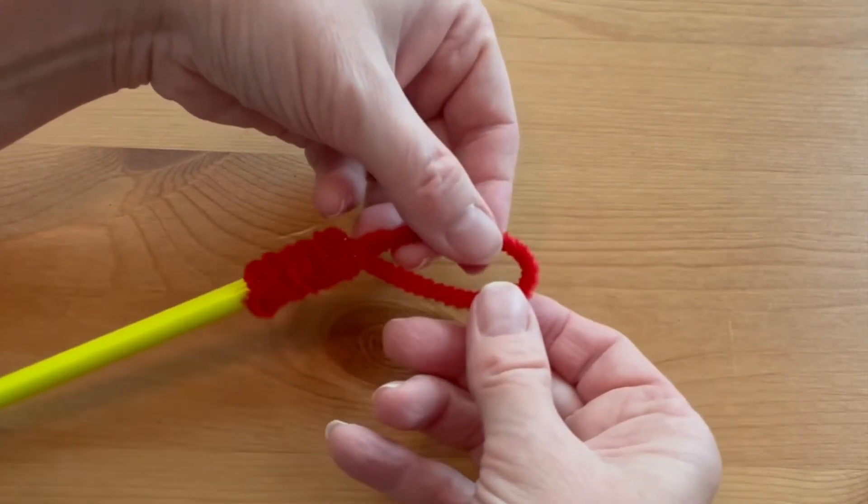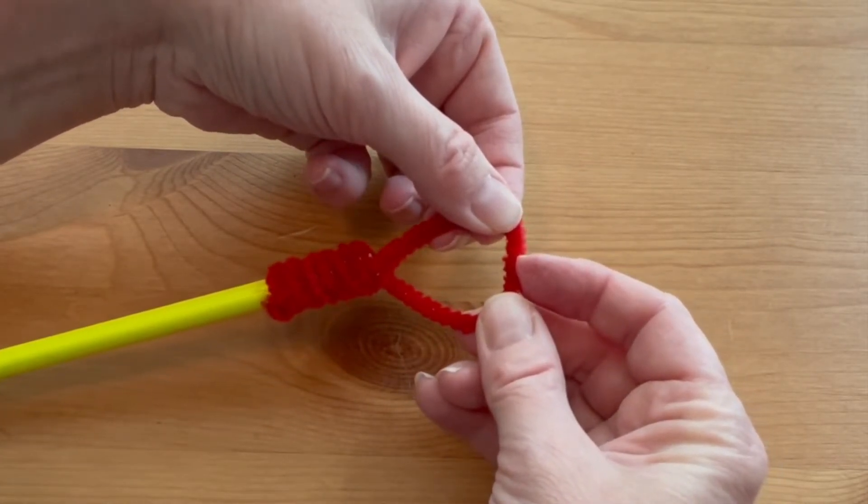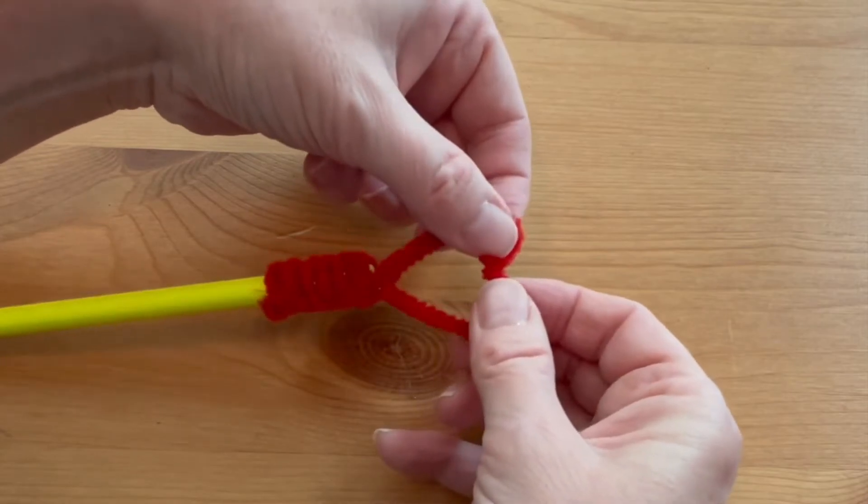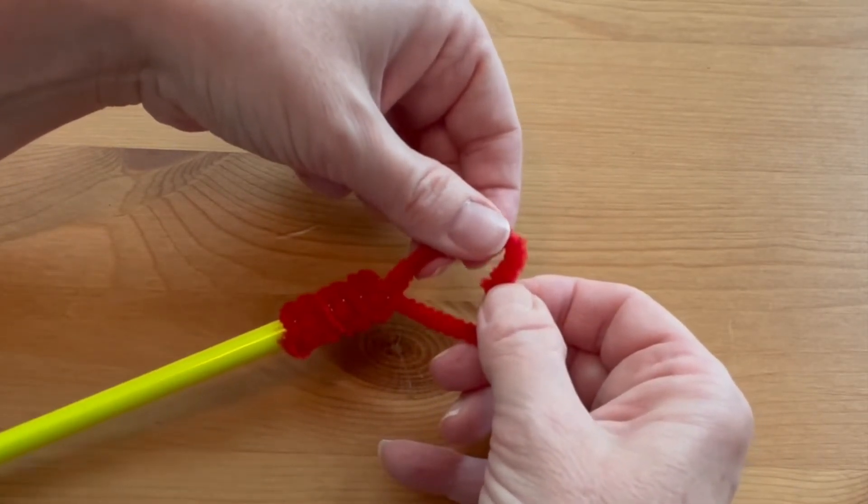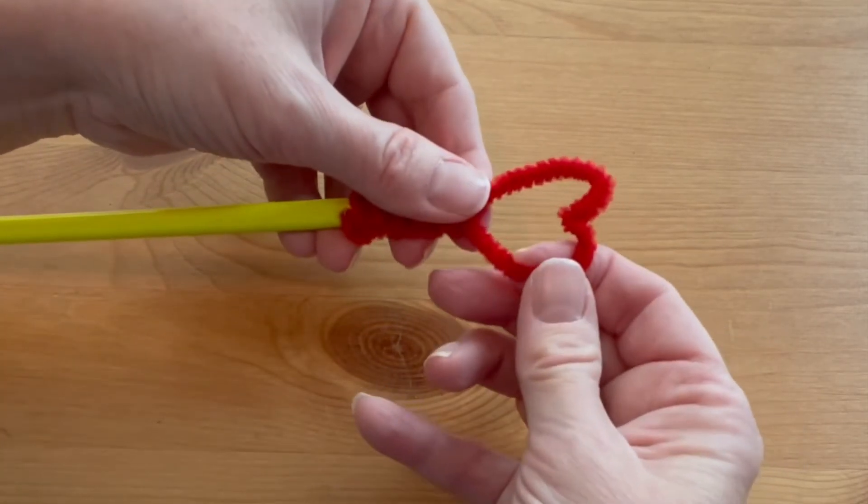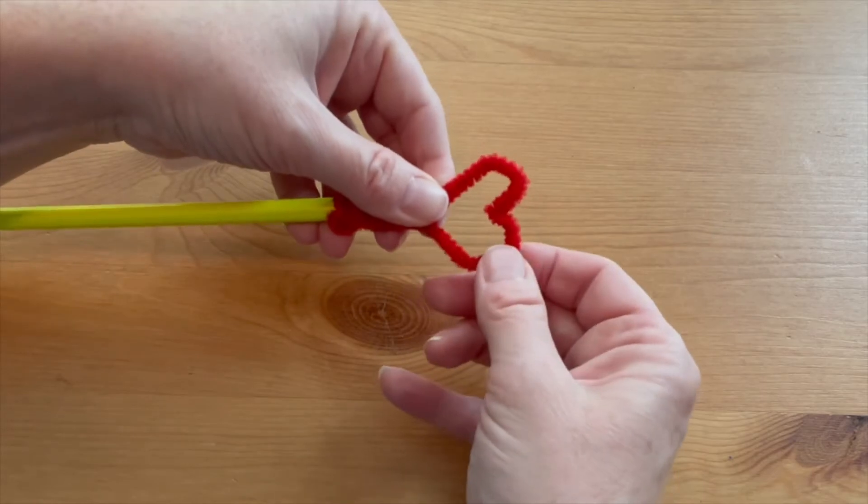To form the heart, grab the sides of the circle with your thumb and push down with your pointer finger to make the indent of the heart. Then round out the curves and you have a nice heart.